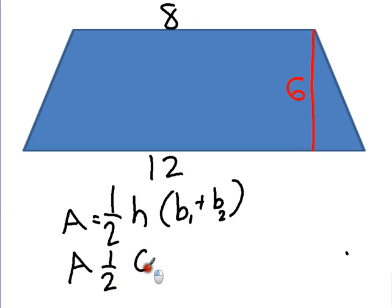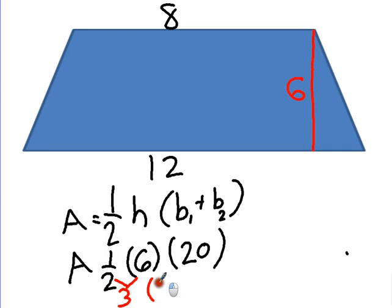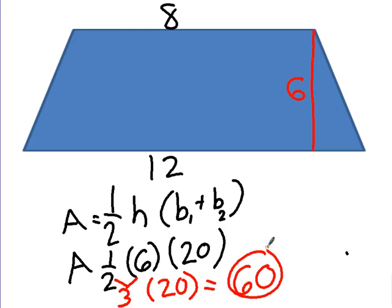And what's 12 plus 8 equal? What's 12 plus 8? 20. 20. So 1 half of 6 is 3. Look, it's a new color. Take these two, and I have 3 times 20. What's 3 times 20 equal? 60. 60. And that's 60 squared units. Okay, 60 squared units.